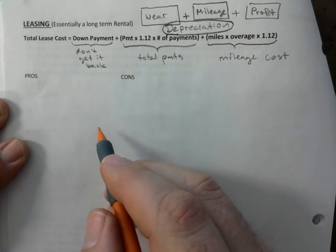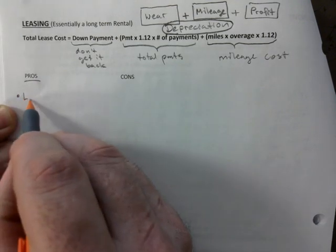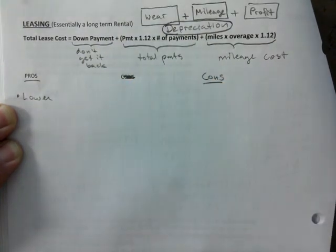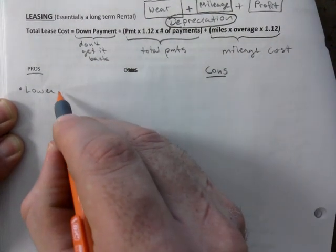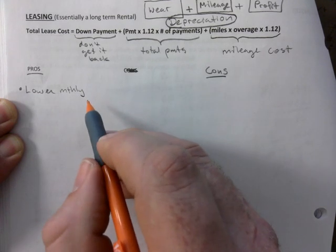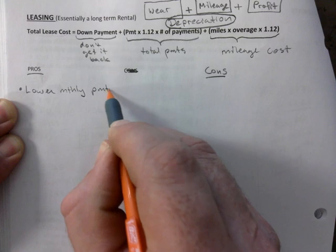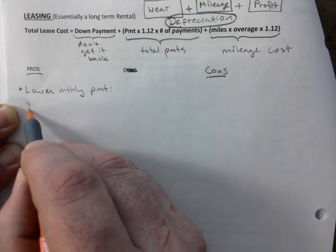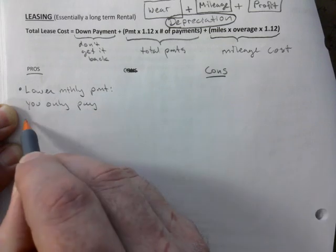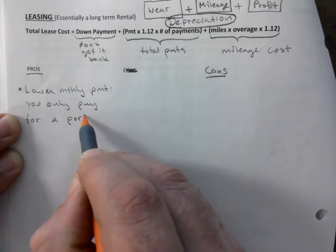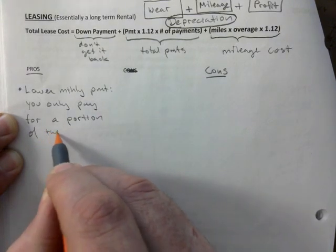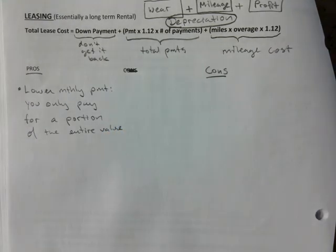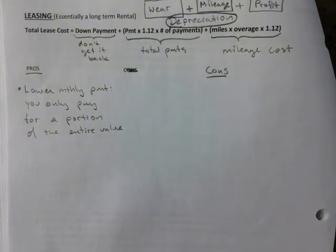So let's talk about some pros and cons. The biggest pro is lower monthly payments. That's the main reason why the monthly payments will be lower compared to buying a brand new one, buying the whole thing.